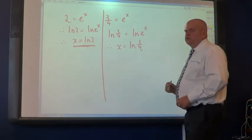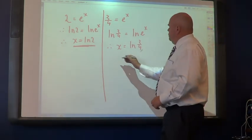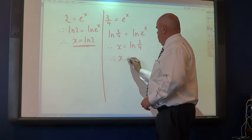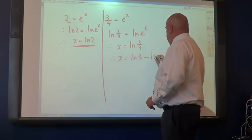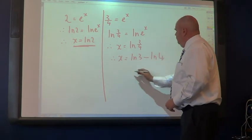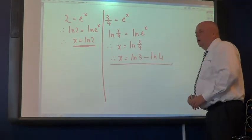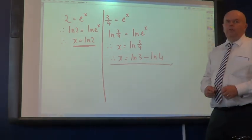And we do the same here. Ln 3 quarters equals ln E to the x. Therefore, x, bringing that down and noting that that's equal to 1, equals ln 3 over 4. Now, you could, if you wish, express this differently. You could say, therefore, x equals ln 3 minus ln 4, making use of a fairly basic log law.